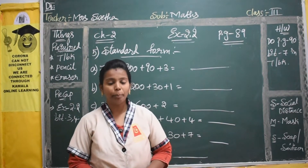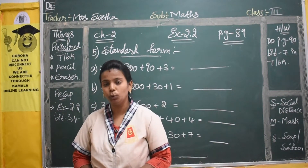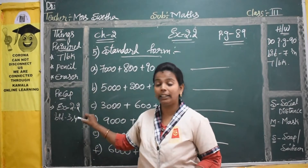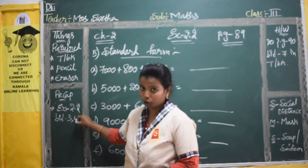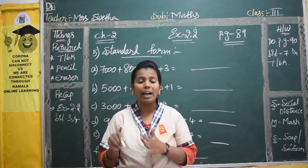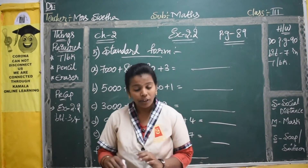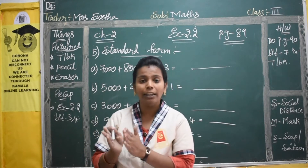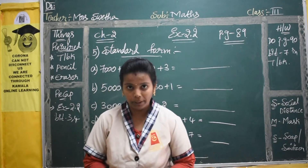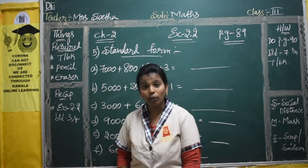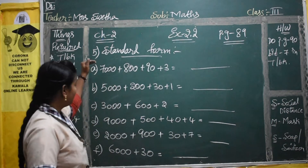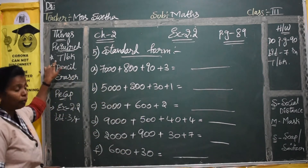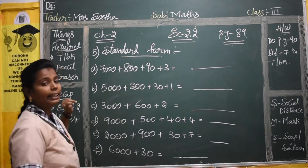Welcome to Maths Class, children. In the previous class, we started with our new exercise 2.2.0 and completed two bits — the third bit and fourth bit — which covered face value and expanded form. We learned how to write expanded form and face value of numbers. Today we are going to start with the fifth bit, and for that you require your term book, pencil, and eraser.